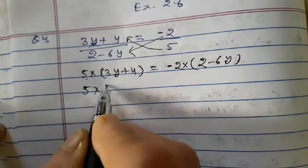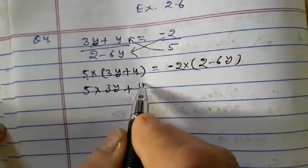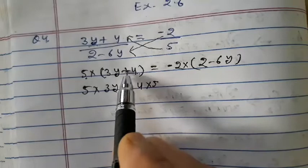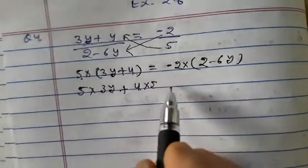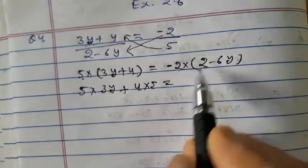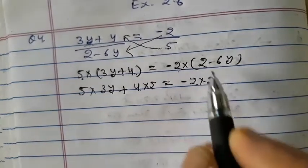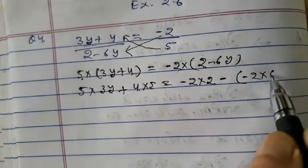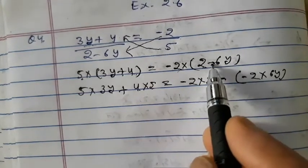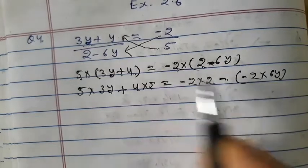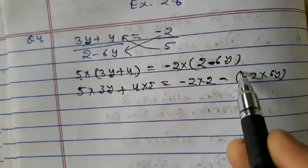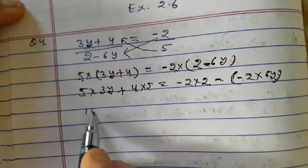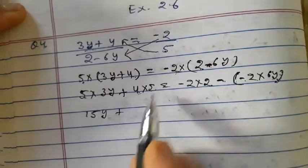Now expanding: 5 into 3y gives 15y, plus 4 into 5 gives 20. So the left side becomes 15y + 20.